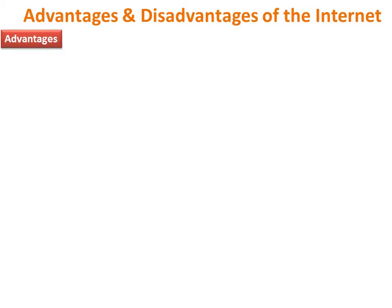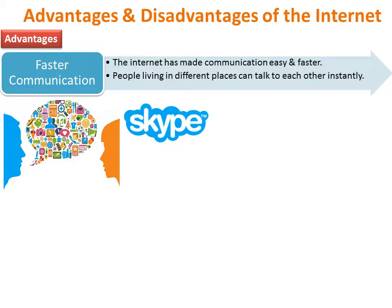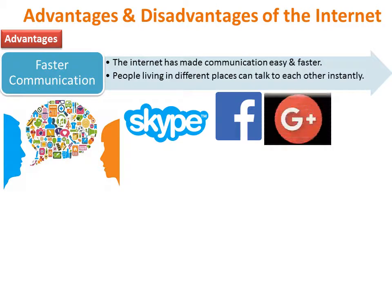Faster Communication: The internet has made communication easy and faster. People living in different places can talk to each other instantly, as the internet provides different services like email, chatting, Skype and many social networking websites, like Facebook, Google+, LinkedIn, etc.